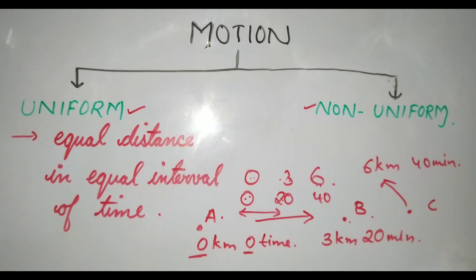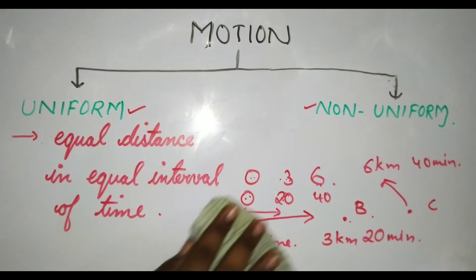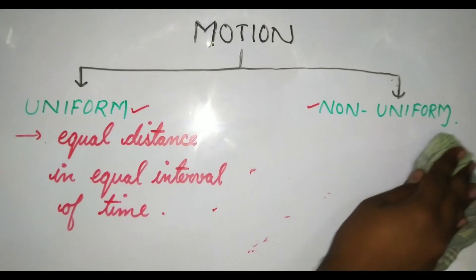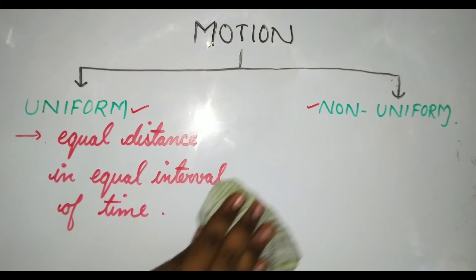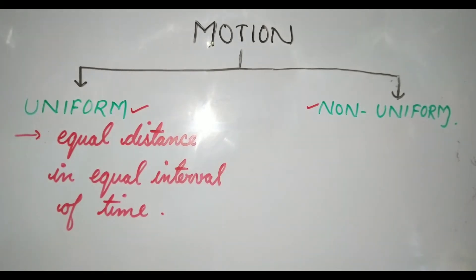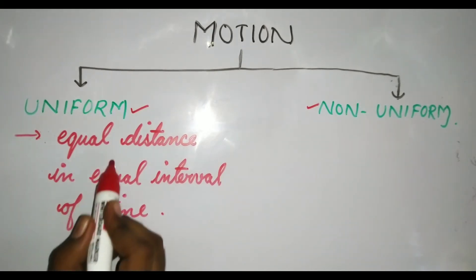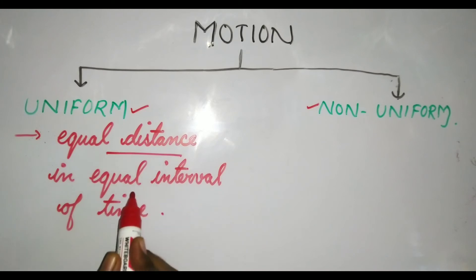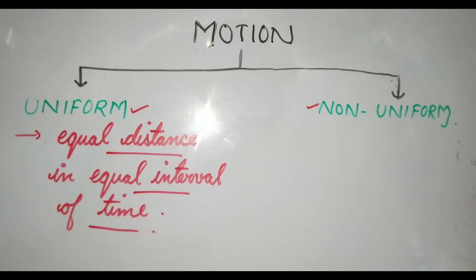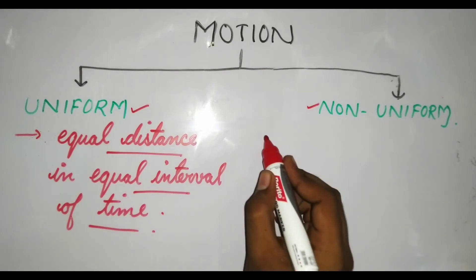So remember, uniform motion is the motion in which the object covers equal distance in equal interval of time. Now let's talk about non-uniform motion.